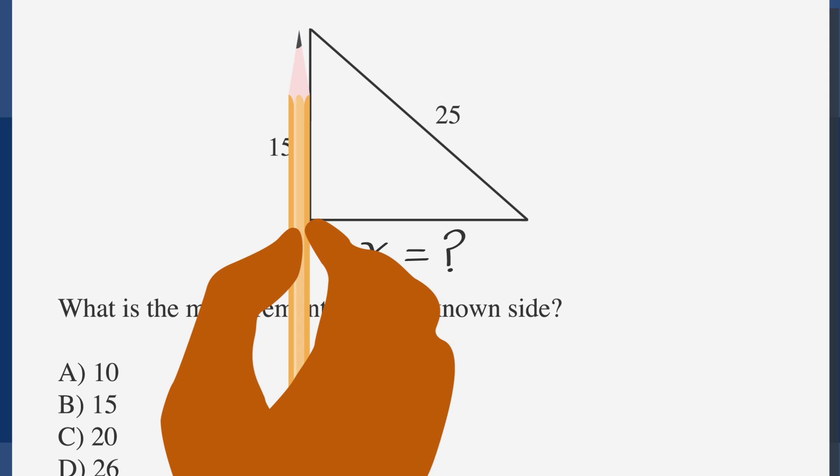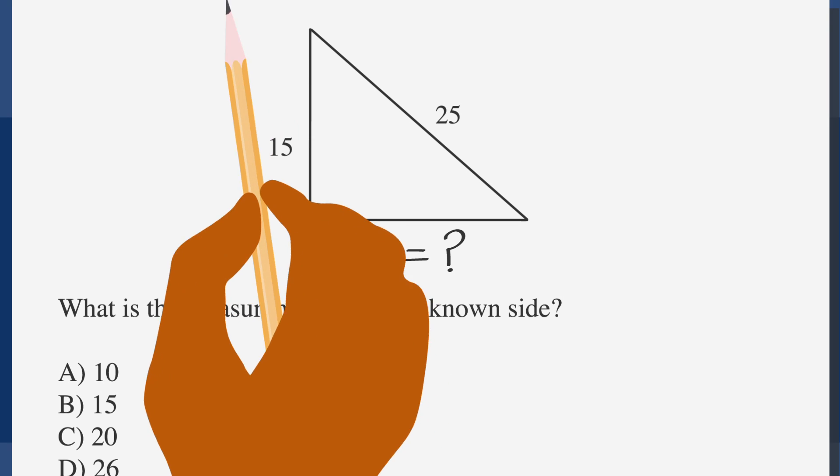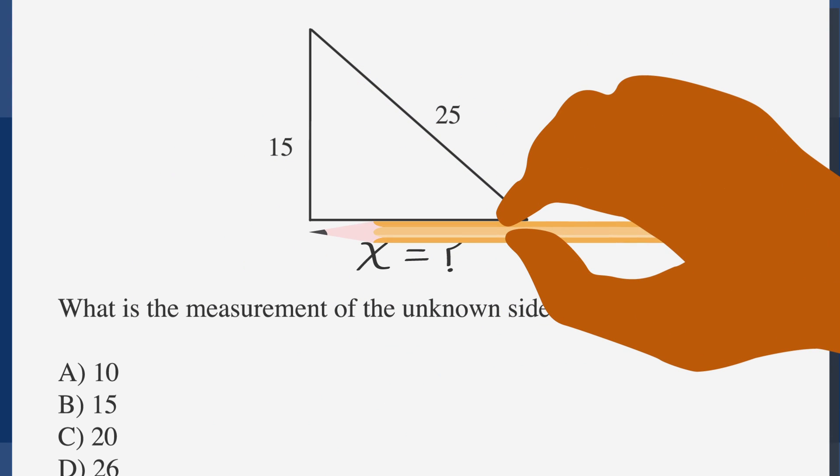Don't move the placement of your fingers on the pencil as you carry over the measurement. Now, compare this measurement to the unknown side by simply lifting your pencil and lining up the point of your pencil with the vertex of the unknown side. Notice that the side is longer than the one you just measured. So, X is greater than 15.